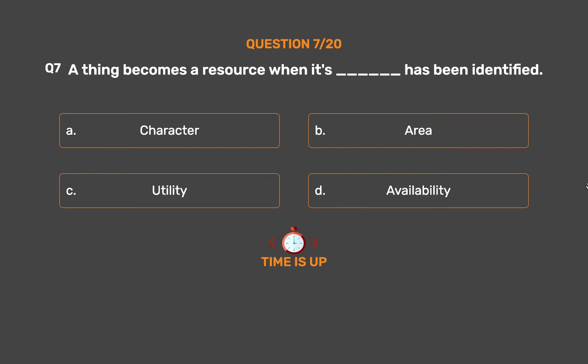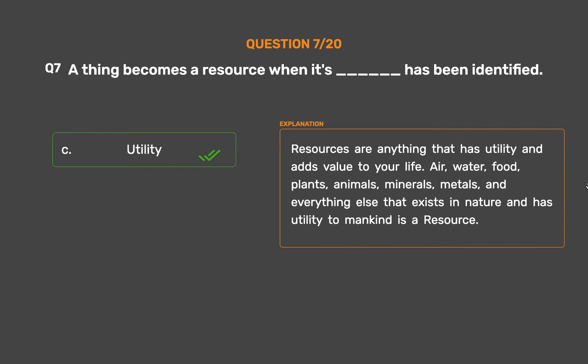The correct answer is Option C: Utility. Resources are anything that has utility and adds value to your life. Air, water, food, plants, animals, minerals, metals, and everything else that exists in nature and has utility to mankind is a resource.